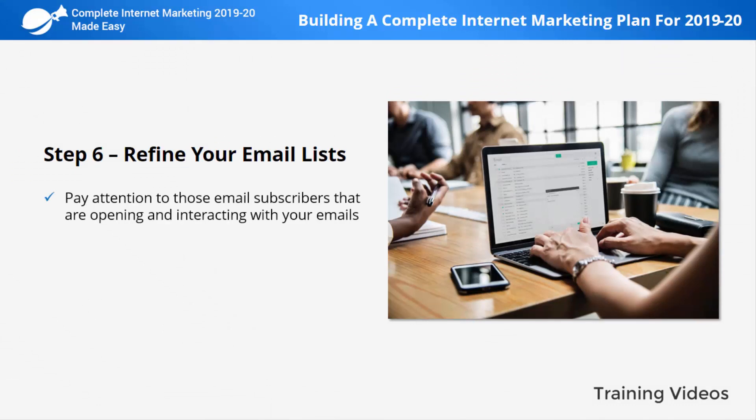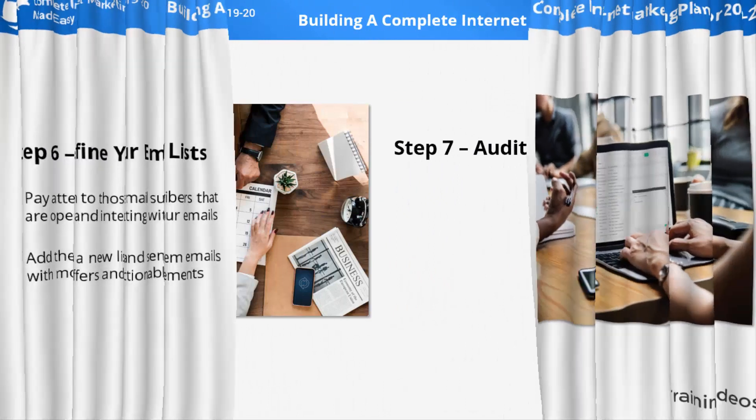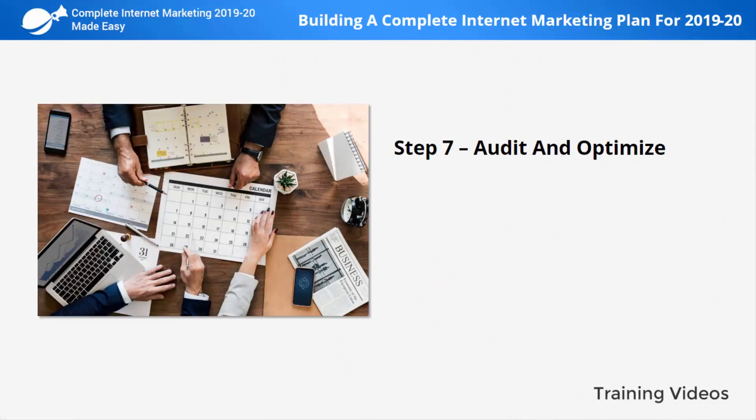Step number six: refine your email lists. Pay attention to those email subscribers that are opening and interacting with your emails. Add them to a new list and send them emails with more offers and actionable elements.